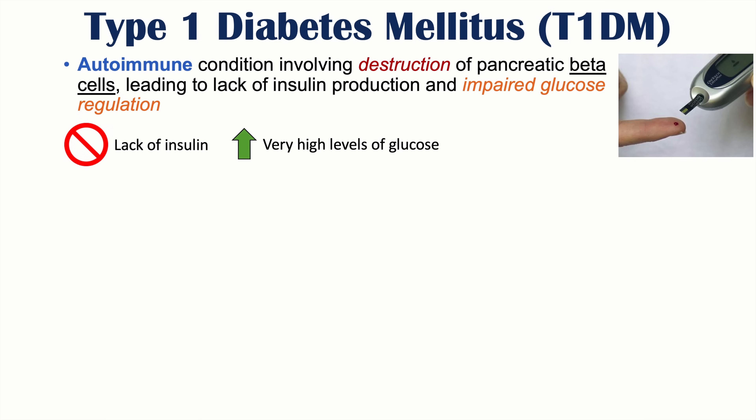Lack of insulin leads to very high levels of glucose. This lack of insulin also leads to increased fat breakdown, because insulin itself induces fat formation. If there's no insulin present, there's going to be an elevation of glucagon, leading to increased fat breakdown and eventual increased ketone production. This leads to some of the characteristic signs and symptoms discussed in this lesson.